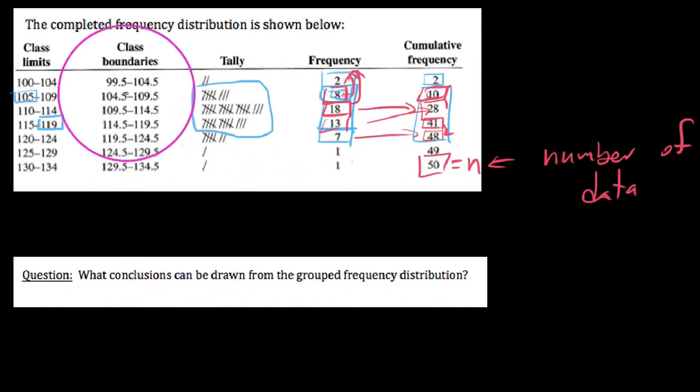What conclusions can we draw? Kind of what we already mentioned, but most states have temperatures, high temperatures that fall within this range here. If you fall out here on the sides, you're kind of unusual. Cheers.